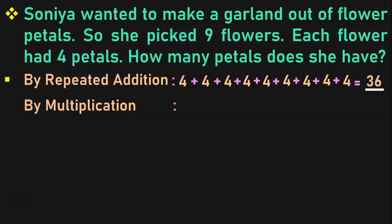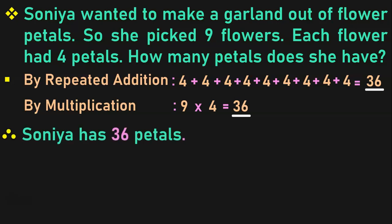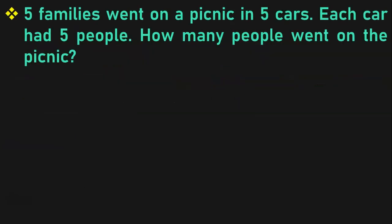And how do you represent it in multiplication? Here we have 9 groups of items and each of them has 4 items in it. So, 9 into 4 is equal to 36, or 9 times 4 is 36. Therefore, Sonia has 36 petals. Very interesting, isn't it? Let us do another sum now.